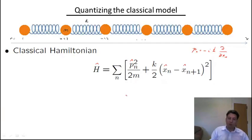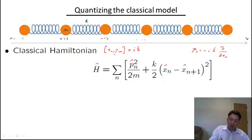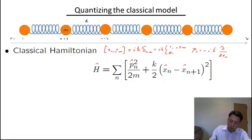X and P satisfy the canonical commutation relations. If they correspond to the same atom, X_N and P_N commute to i h-bar. If they correspond to a different atom — if N is not equal to M — then it's going to be 0. We can unify these commutation relations by writing the delta symbol here, which means it's equal to i h-bar times delta(N, M): equal to i h-bar if N equals M and 0 otherwise.